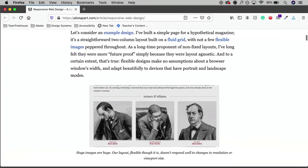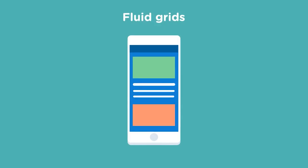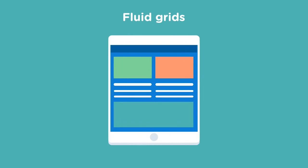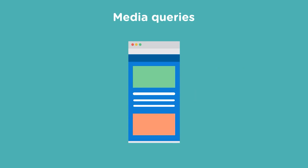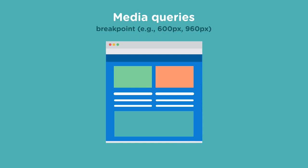Marcotte is credited with coining the term responsive design in an article for A List Apart back in 2010. Marcotte identified three components as key to creating a responsive website: fluid grids, where on phones there is only room for one column of body copy extending all the way across the screen, but on tablet and desktop screens designers can use a multi-column grid layout that expands or contracts based on the width of the device; flexible images, which should expand or contract along with your responsive grid; and media queries, which are CSS rules that get implemented under certain conditions.